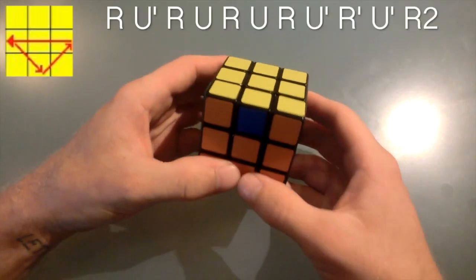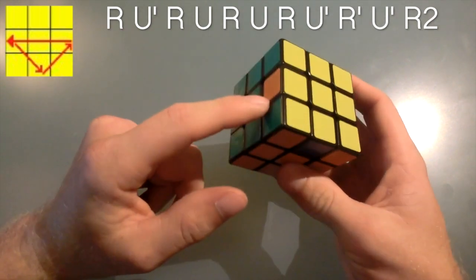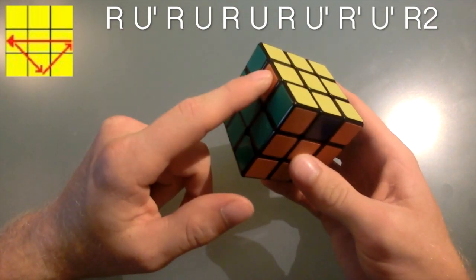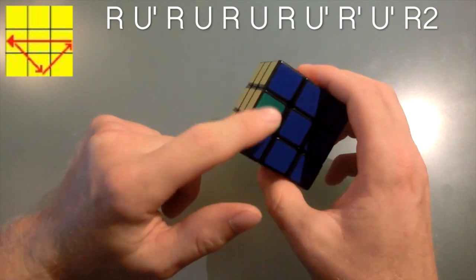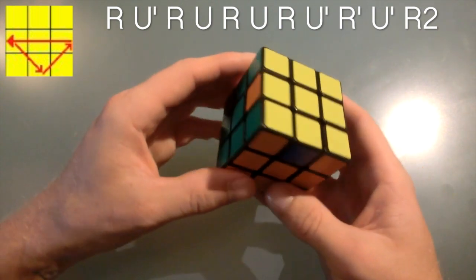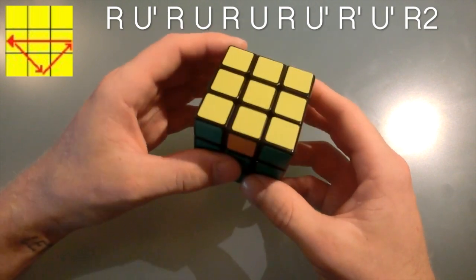Okay, the second U perm, UB, it does the exact same thing, except now you'll see that the orange needs to come here, the blue to here, and the green here, which means that it is now counterclockwise. And this is what it looks like fast.